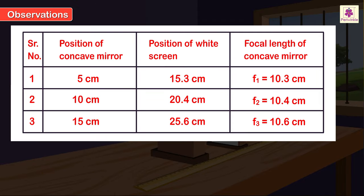Observations: When the position of the concave mirror is 5 cm and the position of the wide screen is 15.3 cm, the focal length is 10.3 cm. When the position of the concave mirror is 10.3 cm and the position of the wide screen is 20.4 cm, the focal length of the concave mirror is 10.4 cm. When the position of the concave mirror is 15.5 cm and the position of the wide screen is 25.6 cm, the focal length of the concave mirror is 10.6 cm.